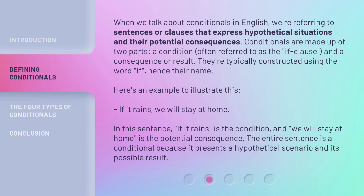When we talk about conditionals in English, we're referring to sentences or clauses that express hypothetical situations and their potential consequences. Conditionals are made up of two parts: a condition, often referred to as the if clause, and a consequence or result. They're typically constructed using the word "if," hence their name. Here's an example to illustrate this.